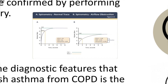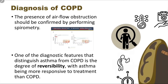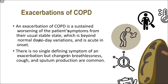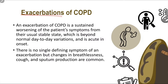If spirometry is available, they may see that the FEV1 over FVC ratio is 0.7 in a normal patient, but in airflow obstruction in these patients it is usually less than 0.7. One of the diagnostic features that distinguish asthma from COPD is the degree of reversibility. Asthma is usually a reversible disease if you give bronchodilators, while COPD usually shows very little or no reversibility.